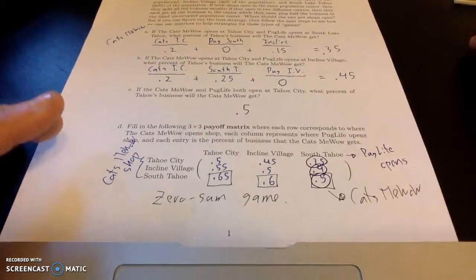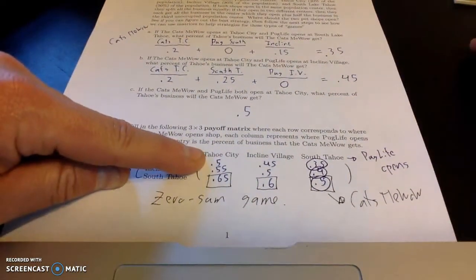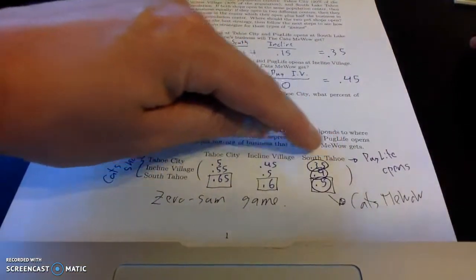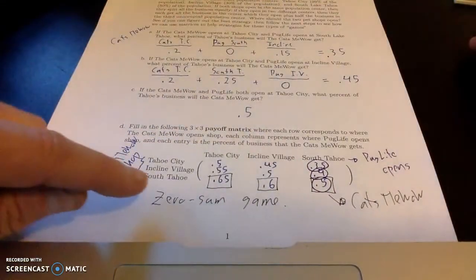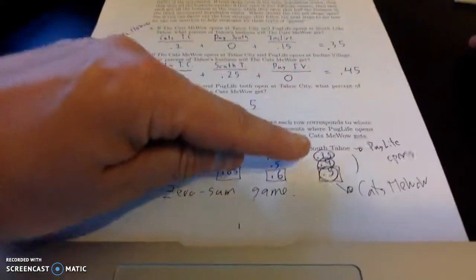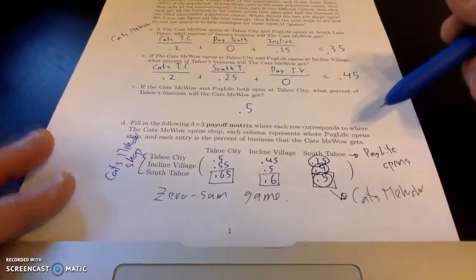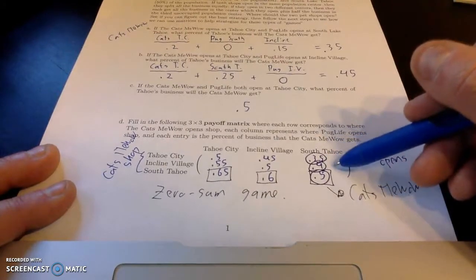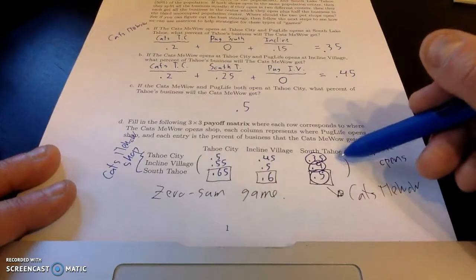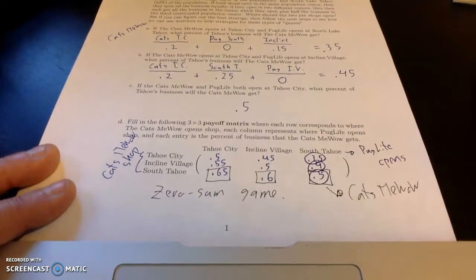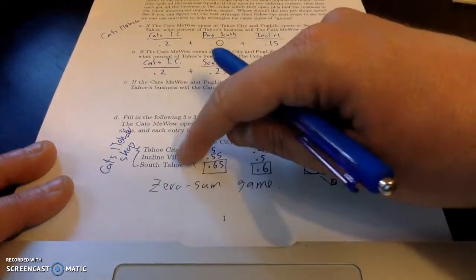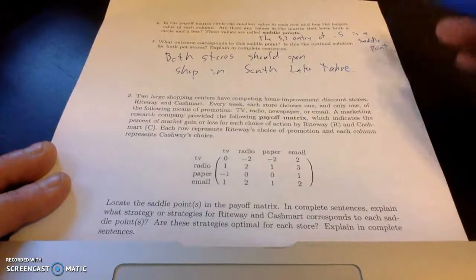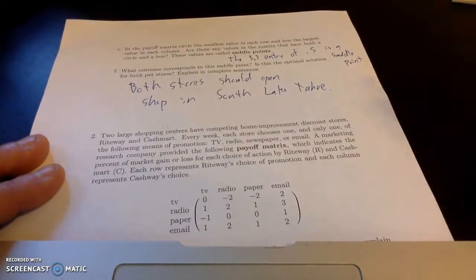So looking at this, if you're Cats Meow, you don't want to pick Tahoe City, because at best you're going to get half the market share. You don't really want to pick Incline. There's two chances of getting half or more. But if Pug's Life picks Tahoe, they're going to get a larger share. Whereas if you're Cats Meow, you want to pick South Tahoe, because at worst, you're going to get that 50%. And if you're thinking in the terms of Pug Life, everything is the opposite. So you want to pick Tahoe, because on Pug Life, you're going to get 65%, 60%, or 50%. So either way, if both stores pick Tahoe, they're both going to split at least the market share via 50-50. Whereas if either store picks the other two cities, they could end up with a worse share. Alright, and that is kind of the main idea about the saddle points. If one exists, we say this game is complete or solved.